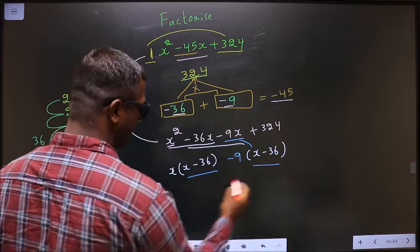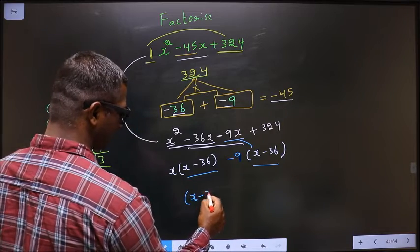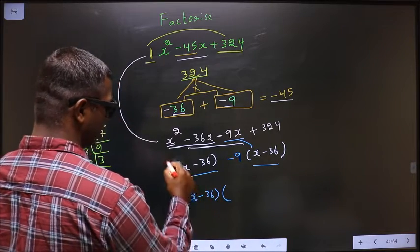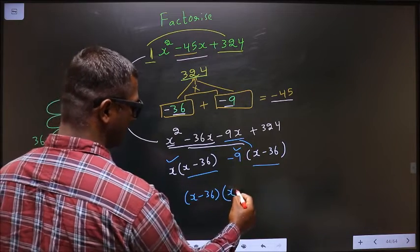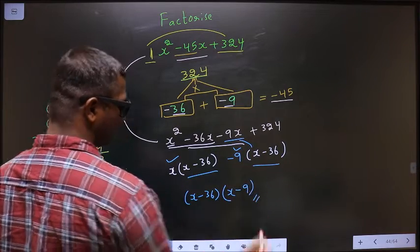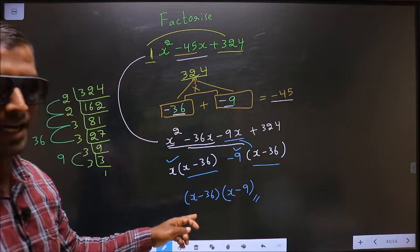Take out x minus 36 common. So here I get x and here I get minus 9. This is our answer.